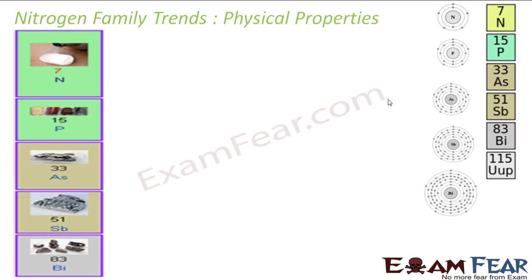Next is the physical properties of these nitrogen family. All the group 15 elements are polyatomic. Nitrogen exists as N2 gas. Phosphorus exists in P4. They are all polyatomic.